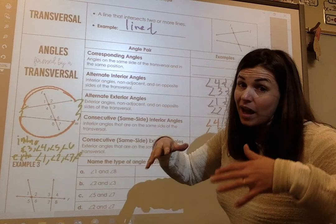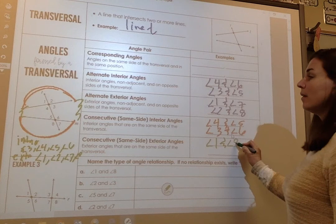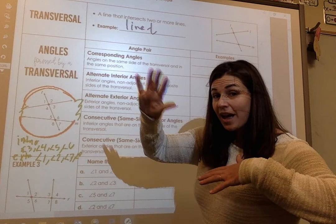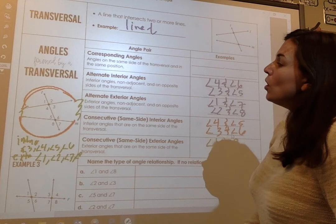For consecutive exterior angles — same side, except they're exterior. So angle 1 and angle 8, and angle 2 and angle 7. Same side, consecutive interior and consecutive exterior.